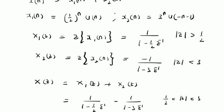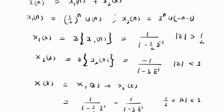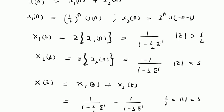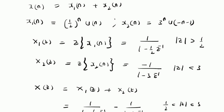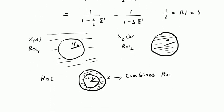To summarize, we have used the linearity property to find the Z-transform of a composite signal. The signal has two components: one causal and one anti-causal. By using the known Z-transform pairs for causal and anti-causal signals, we derived the Z-transform of the overall signal X of n. The combined ROC is the intersection of the two individual ROCs, which is this ring-like structure. Thanks for watching.